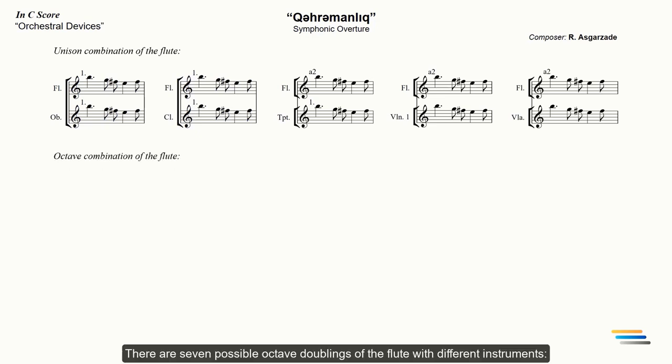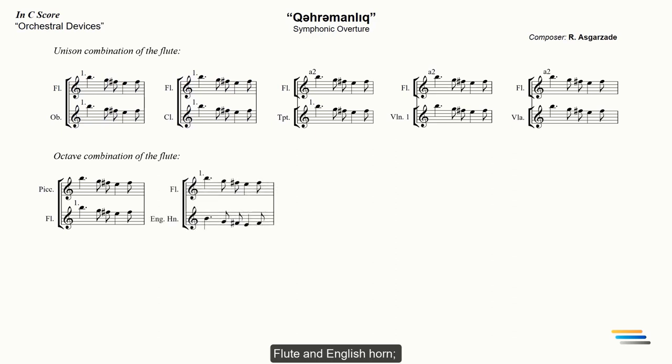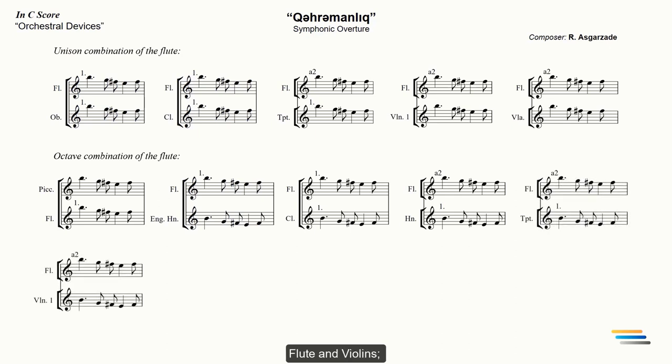There are seven possible octave doublings of the flute with different instruments: flute and piccolo (piccolo sounds an octave higher than written, even in C score), flute and English horn, flute and clarinet, flute and French horn, flute and trumpet, flute and violins, flute and violins.